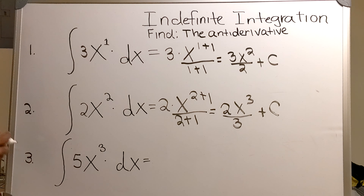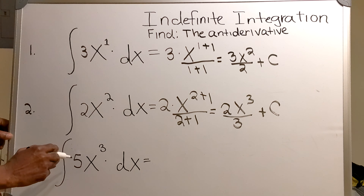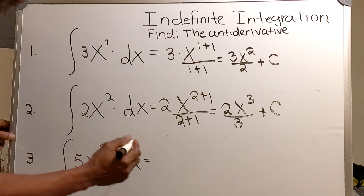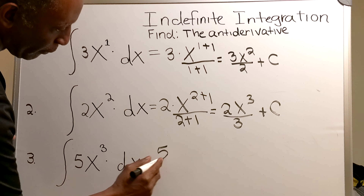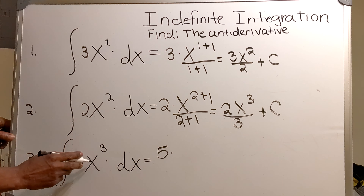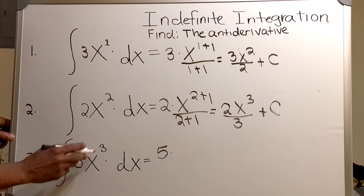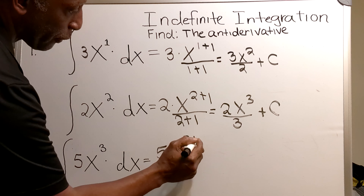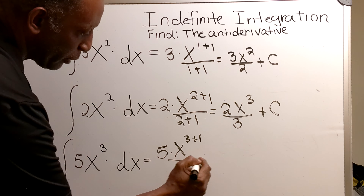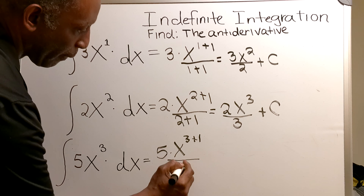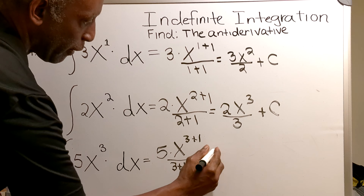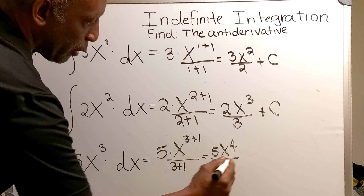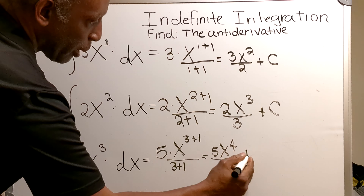For problem number three, I'm asking myself the same question: what is 5x cubed a derivative of? I bring the 5 out, then I multiply the 5 by the antiderivative of x cubed. Then you add 1 to the 3, then you divide the whole thing by 3 plus 1. That equals 5x to the fourth over 4 plus c.